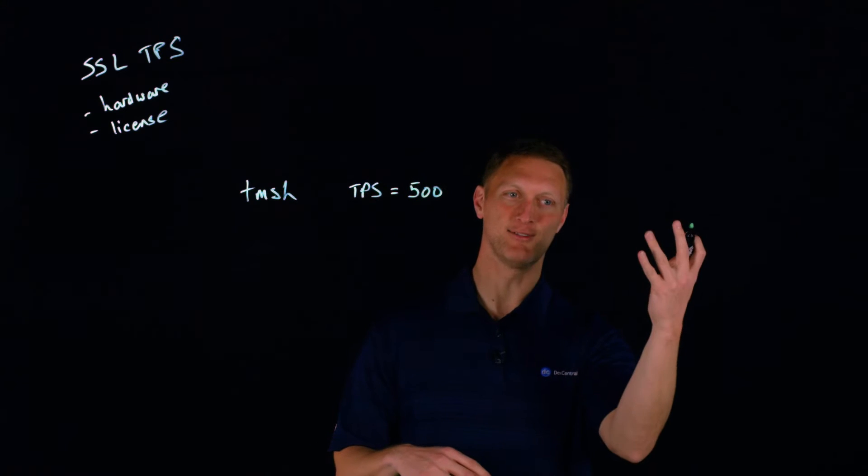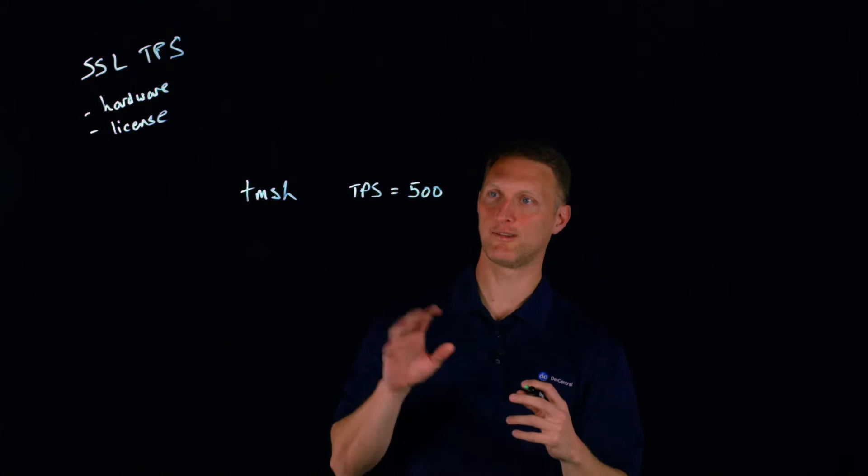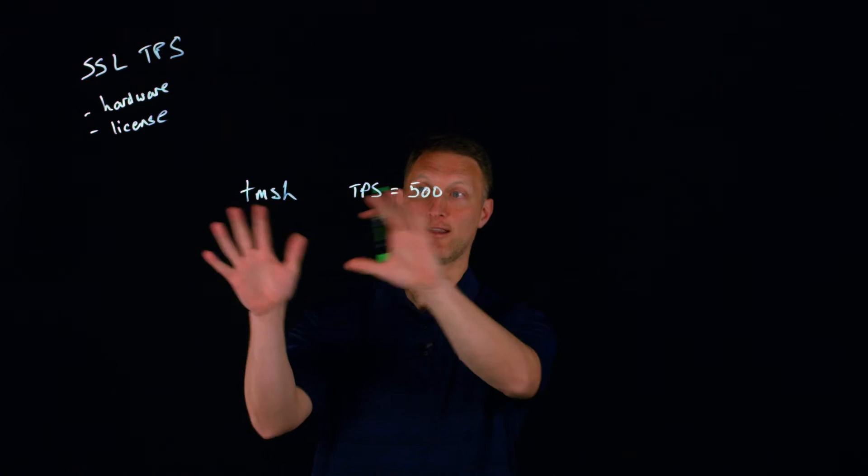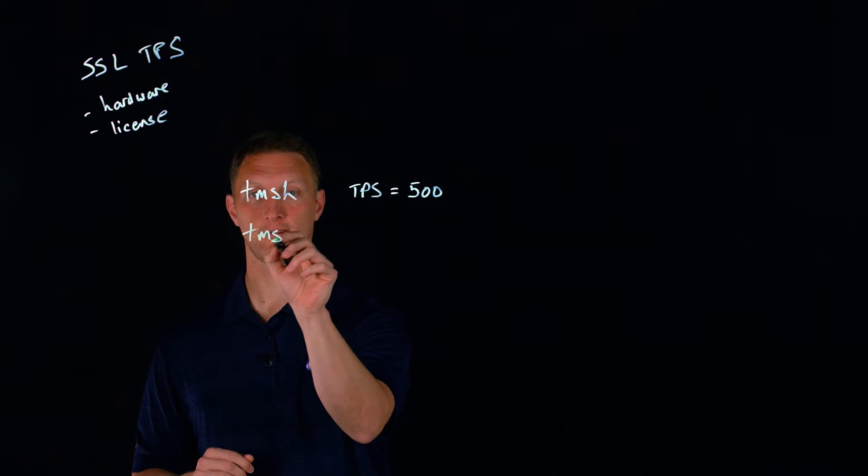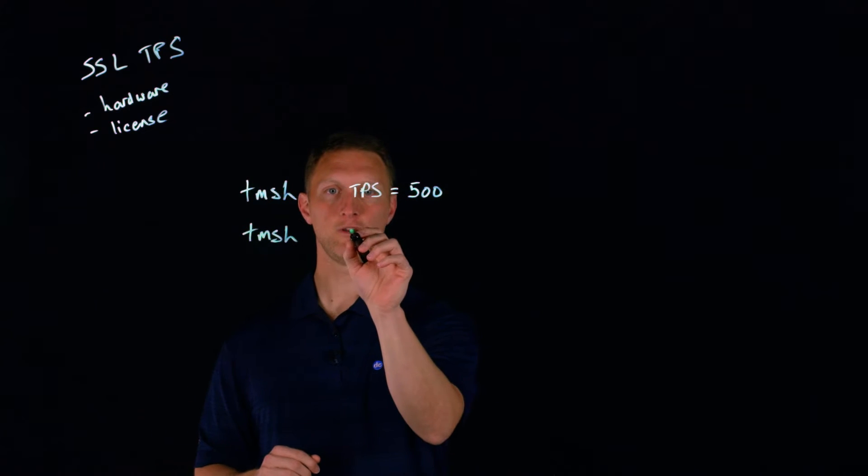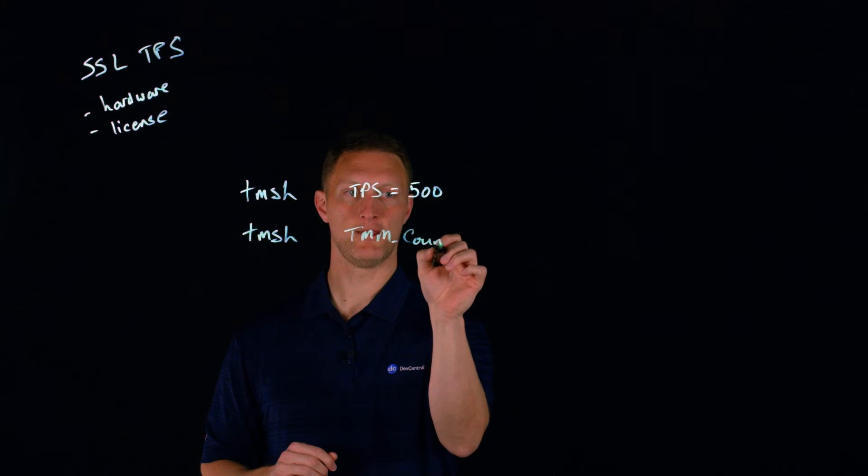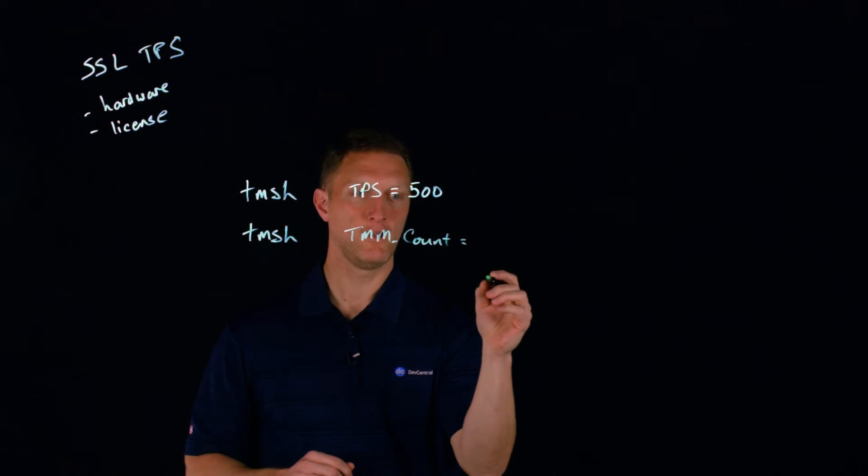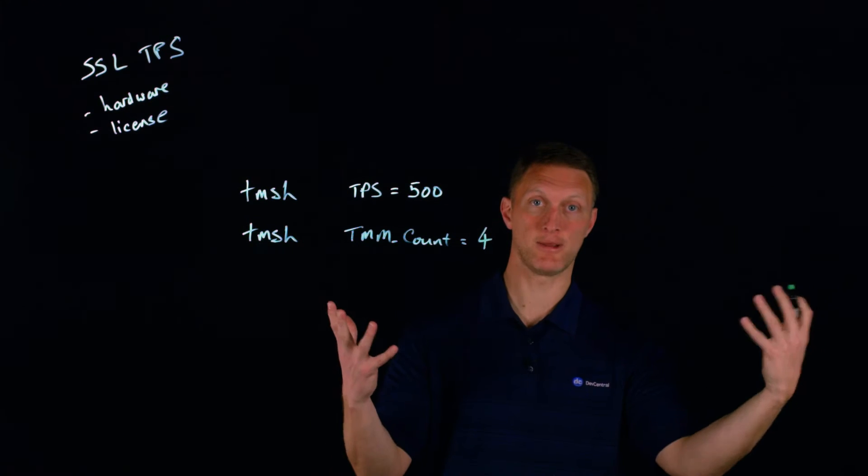I know I just mentioned you got like almost 250,000 on some of these things, so it's just an example. There's another command, and I'll put TMSH here as well, where you can see how many TMMs you have. So I'll put TMM count here, and let's say you have four TMMs on this given Big IP system.